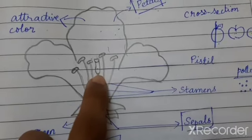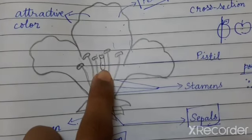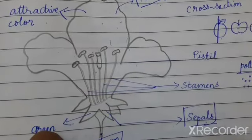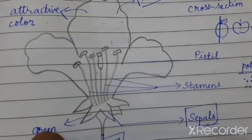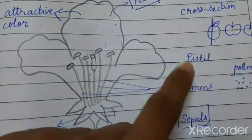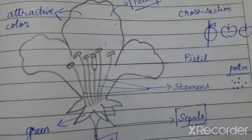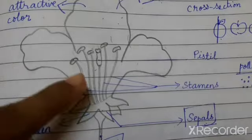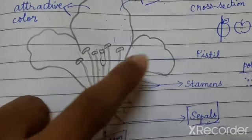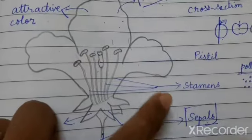To differentiate between pistil and stamen: the pistil is the innermost part in the flower, surrounded by the stamens. So in the centermost part of the flower, you will find both pistil and stamens. The innermost one is the pistil, surrounded by stamens.